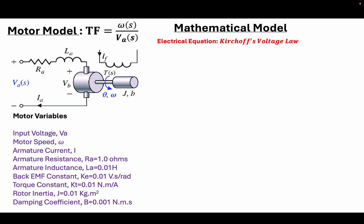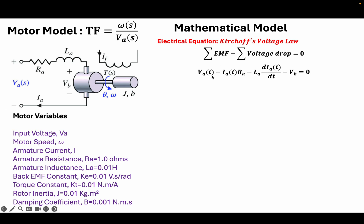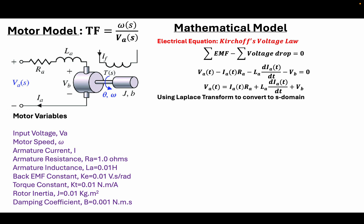The first equation is the electrical equation, and we are going to develop that using Kirchhoff's voltage law. According to that law, the summation of the EMF minus the summation of the voltage drops in the electrical loop is equal to zero. The EMF is the applied voltage, and the voltage drops include the drop across the armature resistance, the drop across the armature inductance, and the back EMF. This reduces to one equation in the time domain, and for the transfer function we convert it to the s-domain using the Laplace transform.